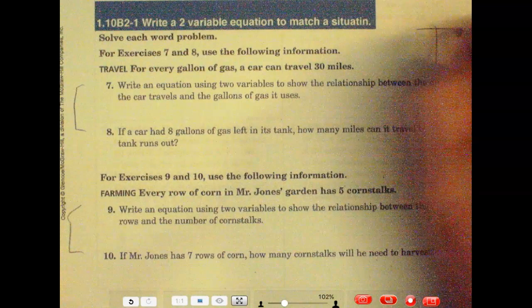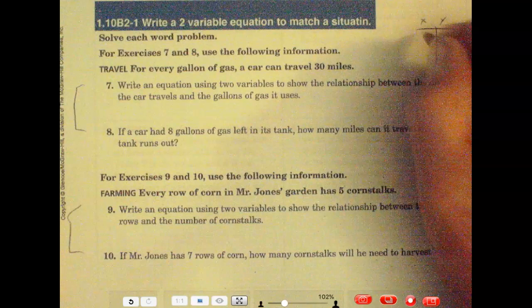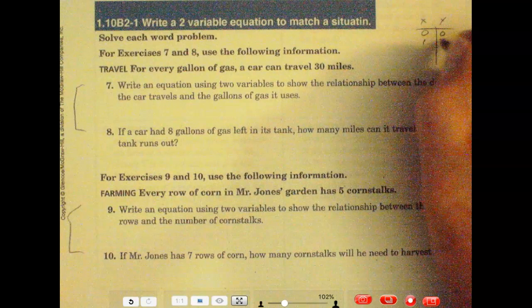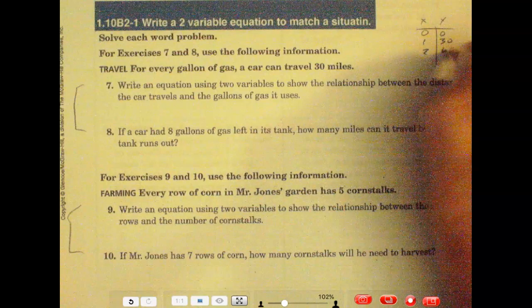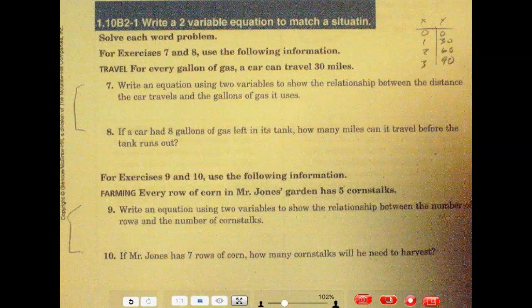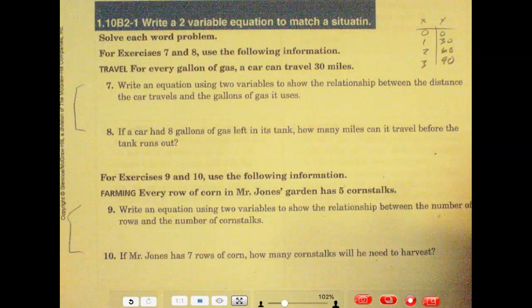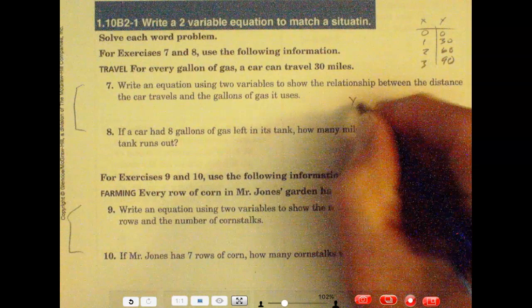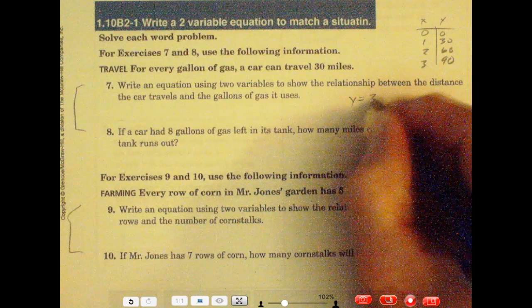I like just making an xy chart here. Say 0 gallons, 0 miles, 1 gallon, 30, 2 gallons, 60, 3 gallons would be 90. So when I make that table there, it helps me look at that and realize that it looks like the y is equal to exactly 30x.